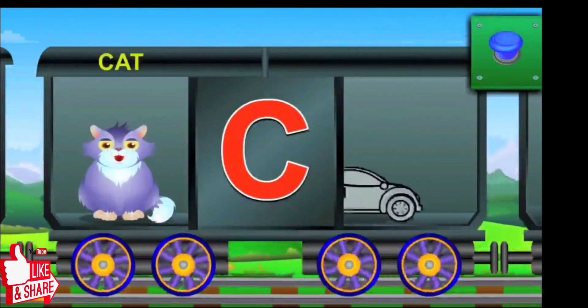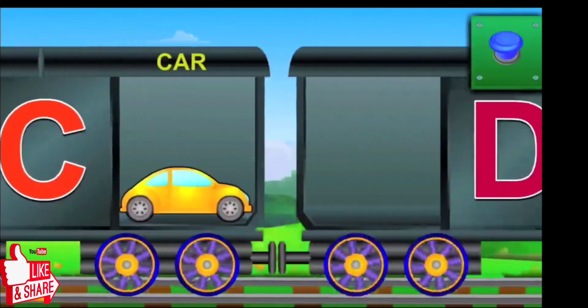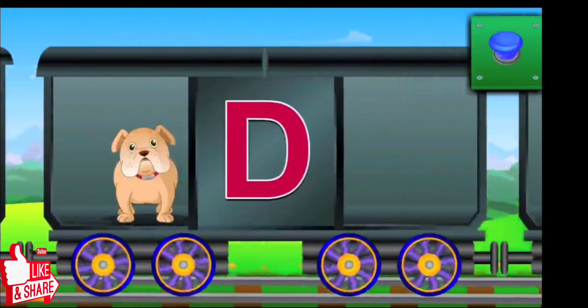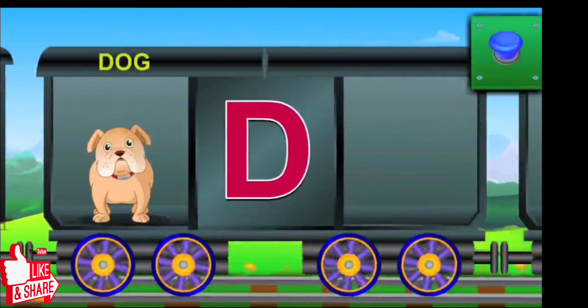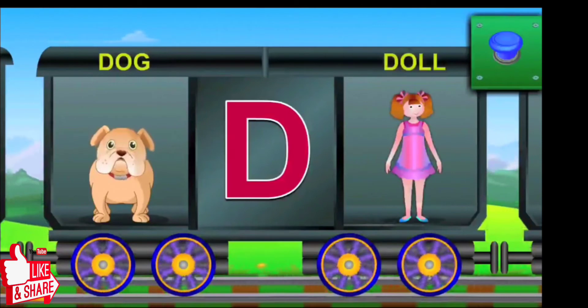Now comes C. C for cat, and the cat says meow. C for car, and the car is yellow. Here is D. D for dog, and the dog named Bingo. D for doll, and the doll is tall.